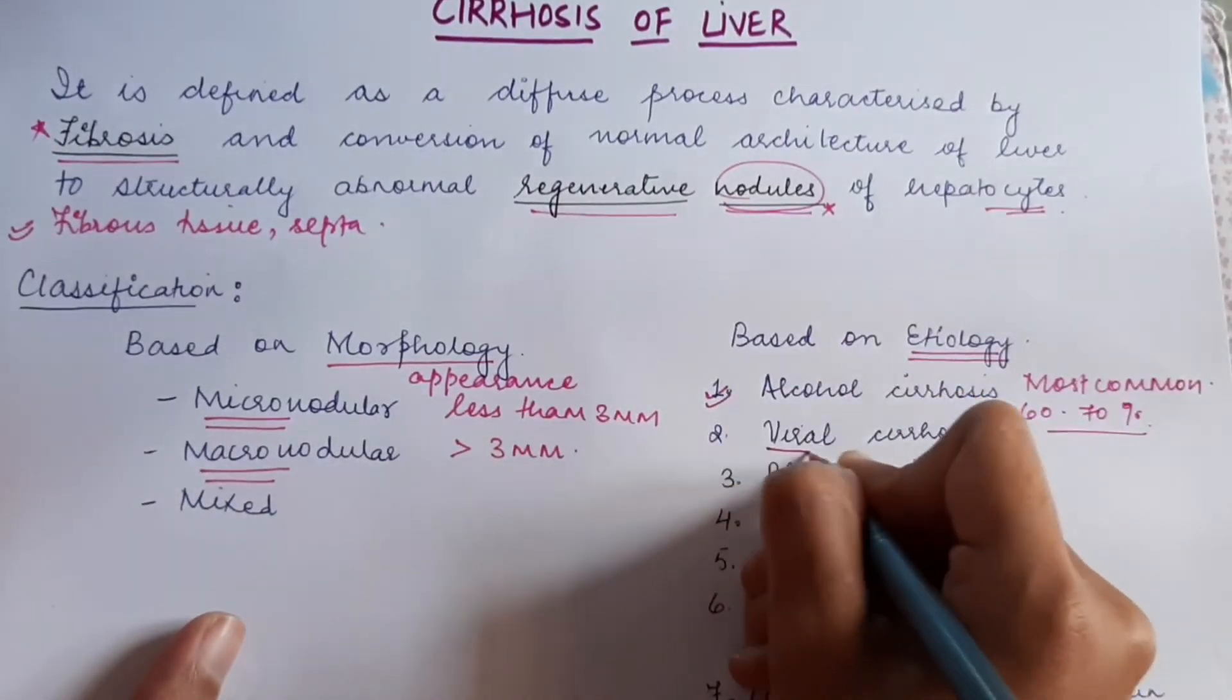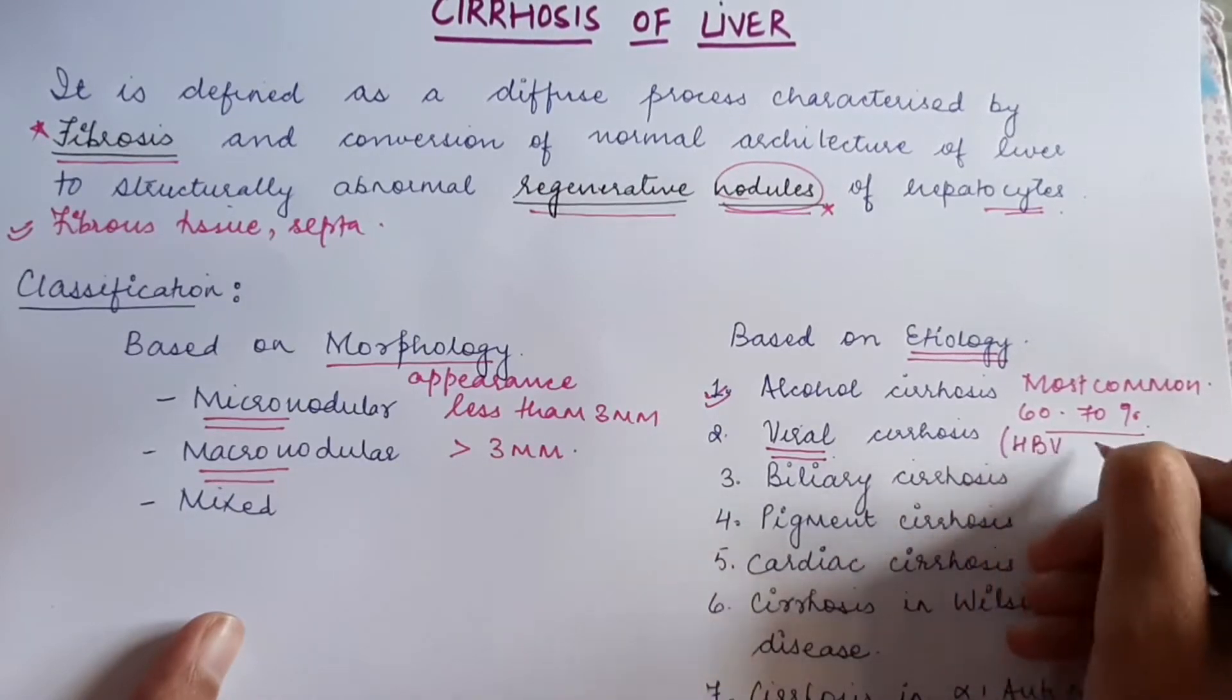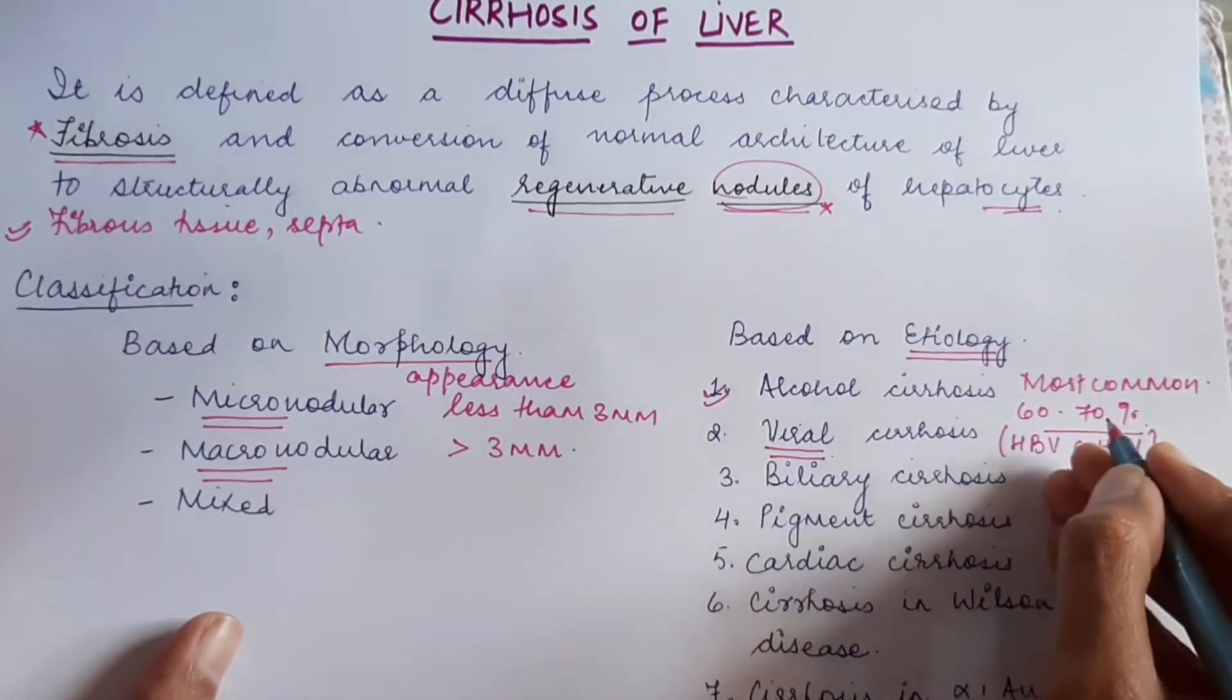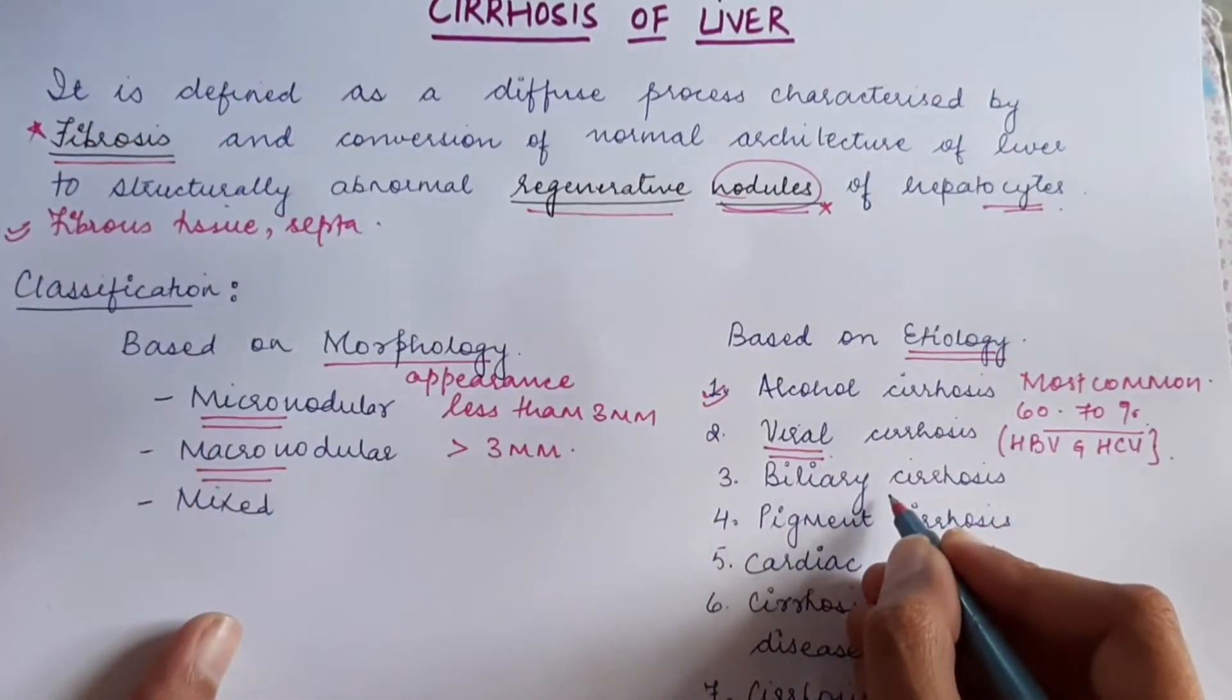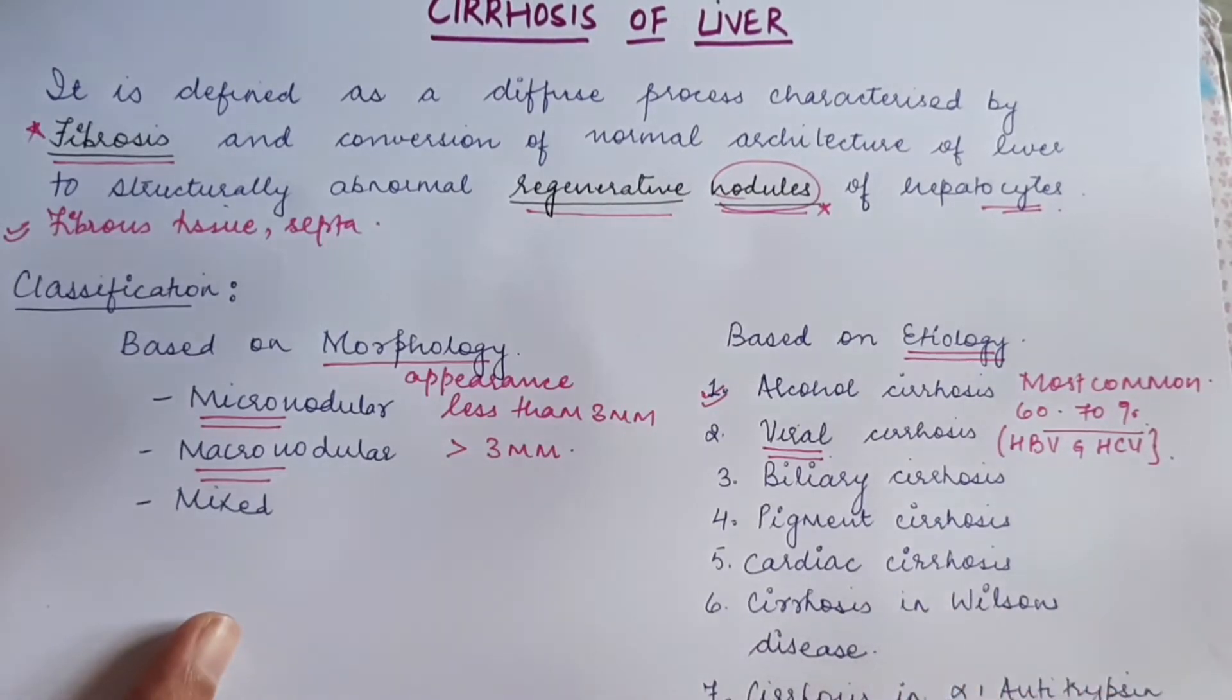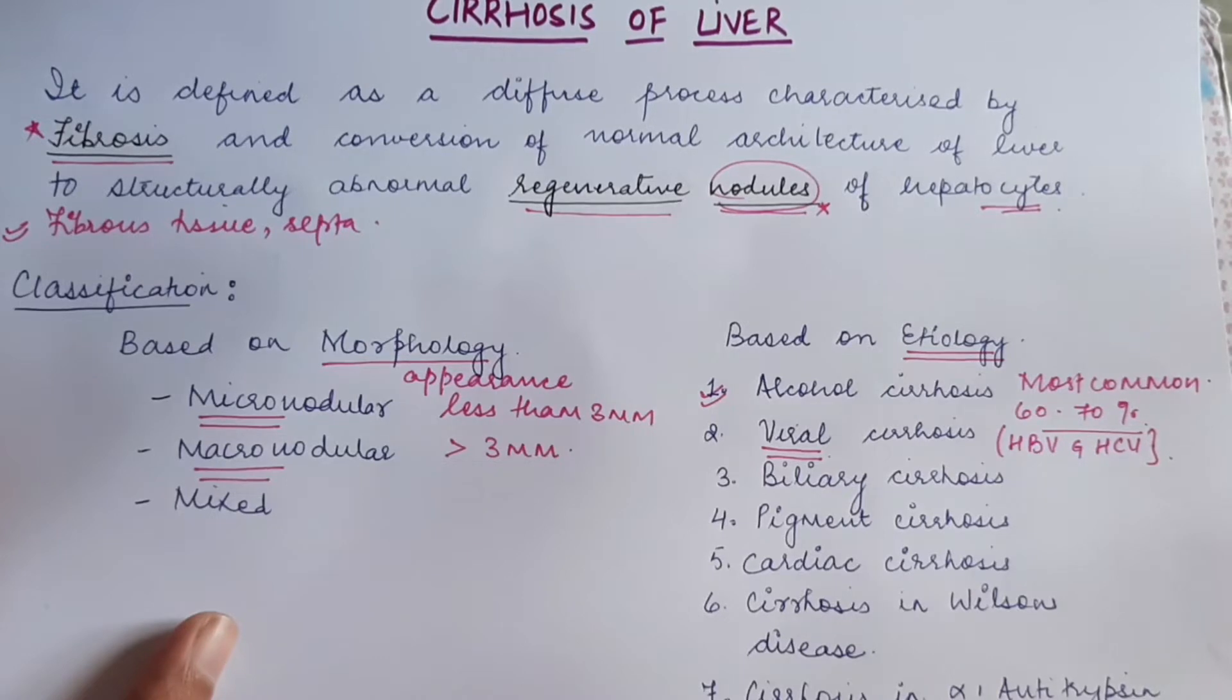It may be because of virus infection. In the last video, we have seen HBV and HCV virus infecting the liver, which can cause necrotic changes and further result in fibrosis. It may be biliary cirrhosis, pigment cirrhosis, cardiac cirrhosis, cirrhosis in Wilson's disease, and cirrhosis in alpha-1-antitrypsin deficiency.